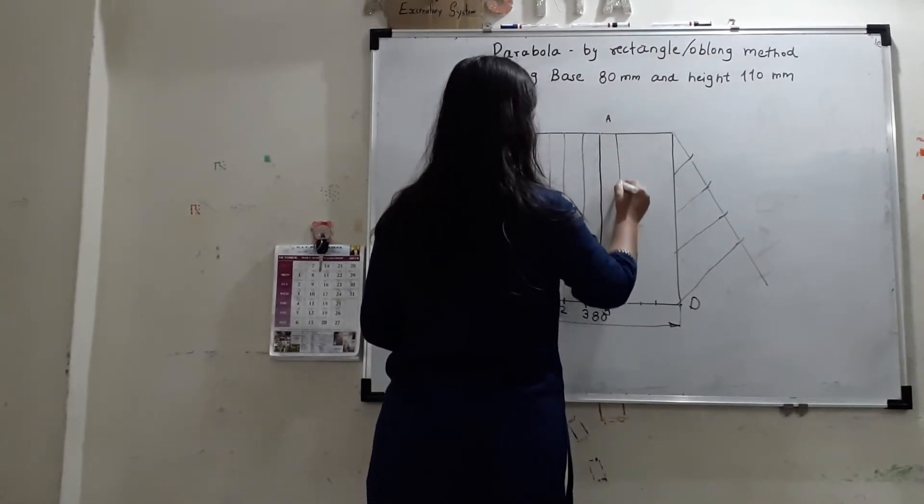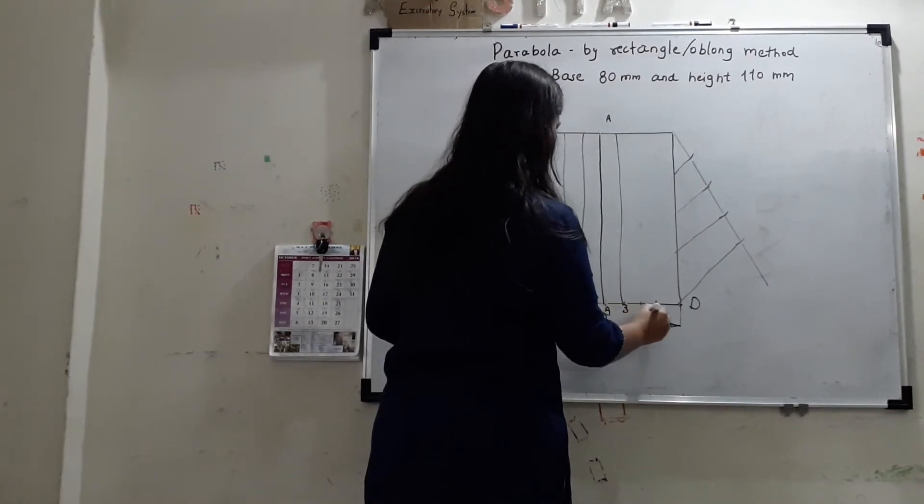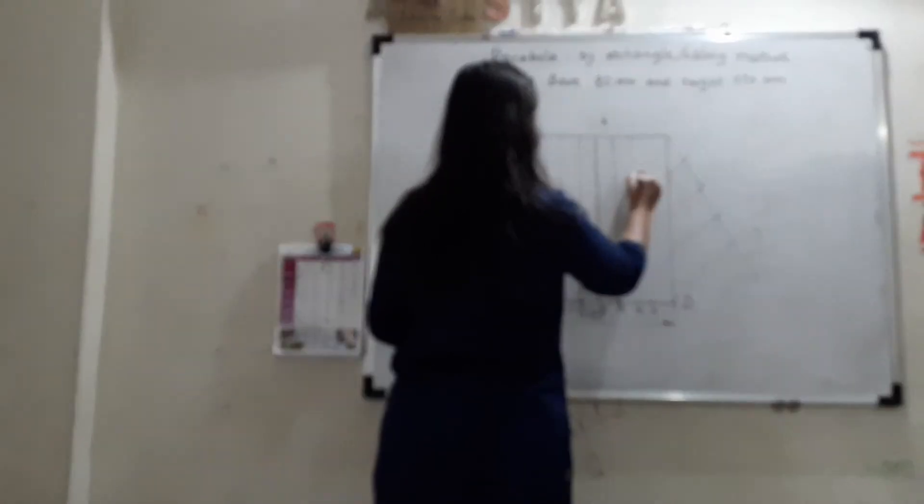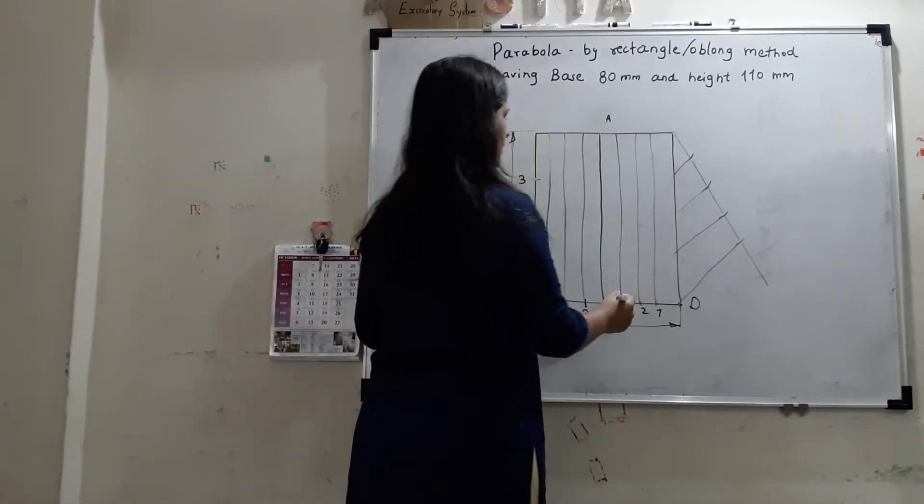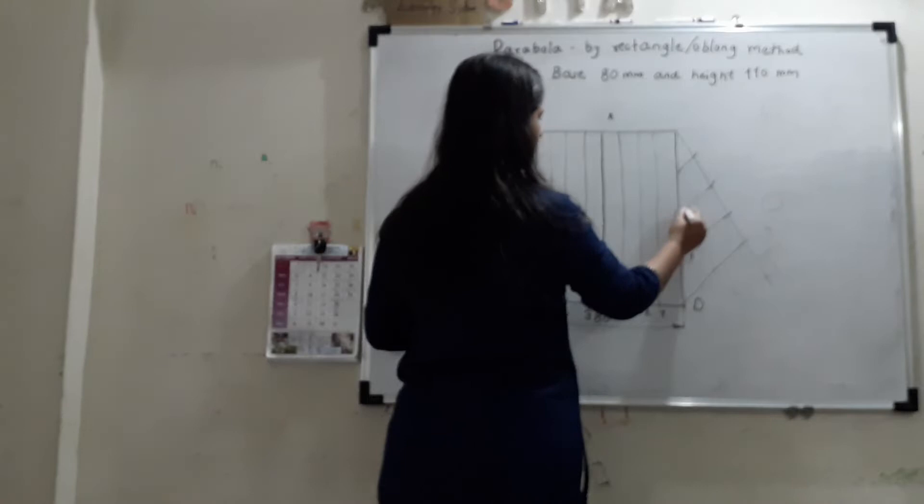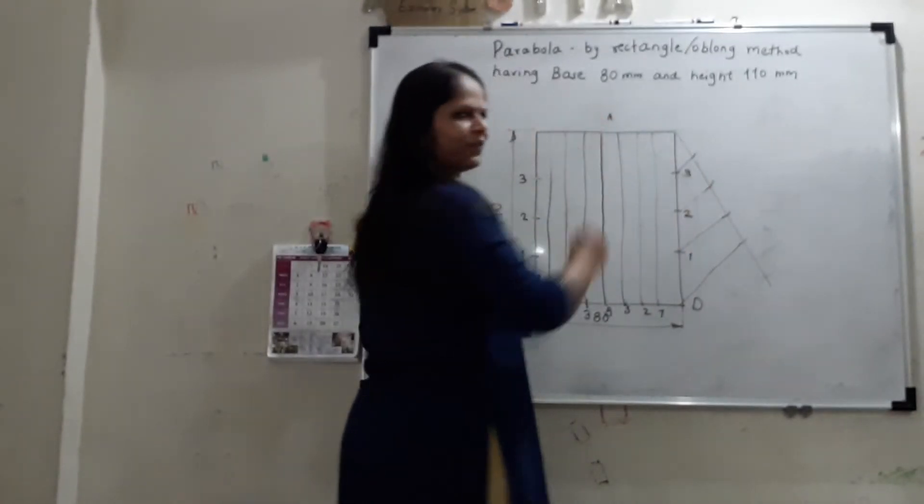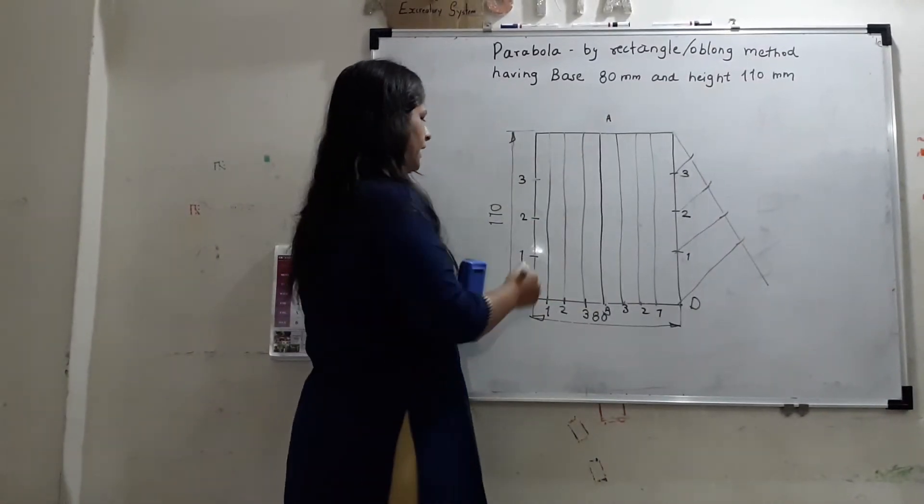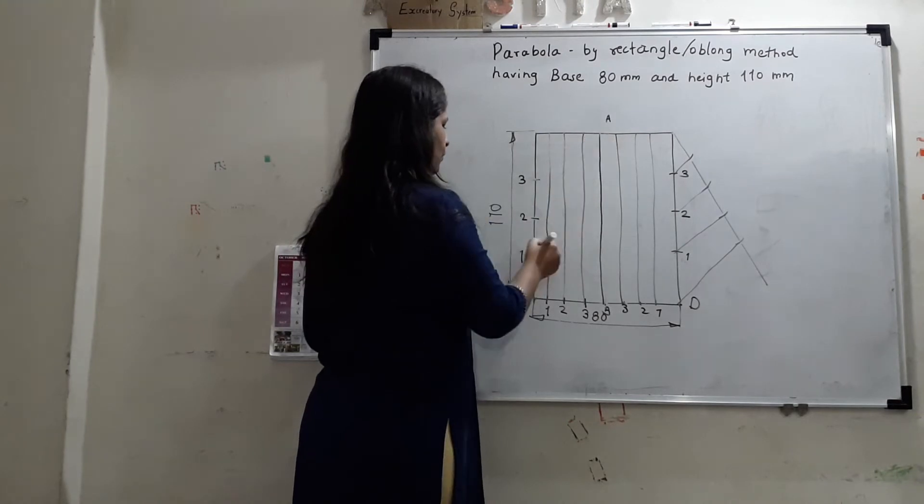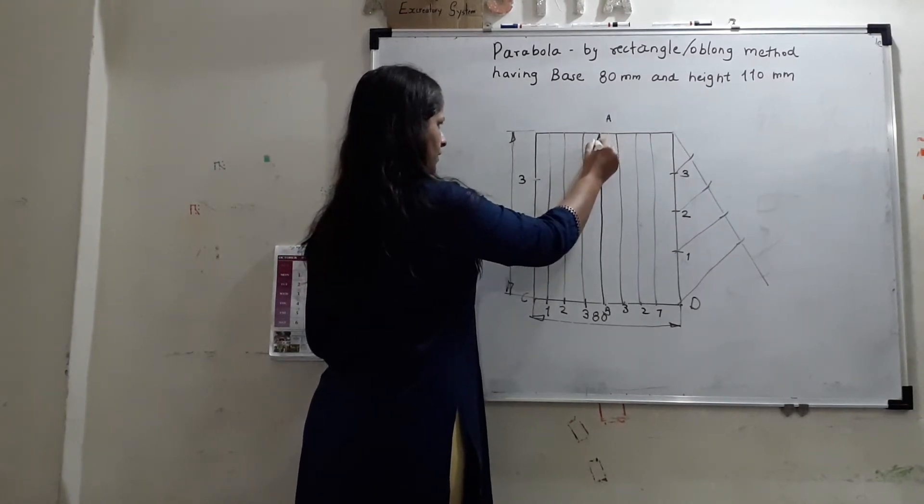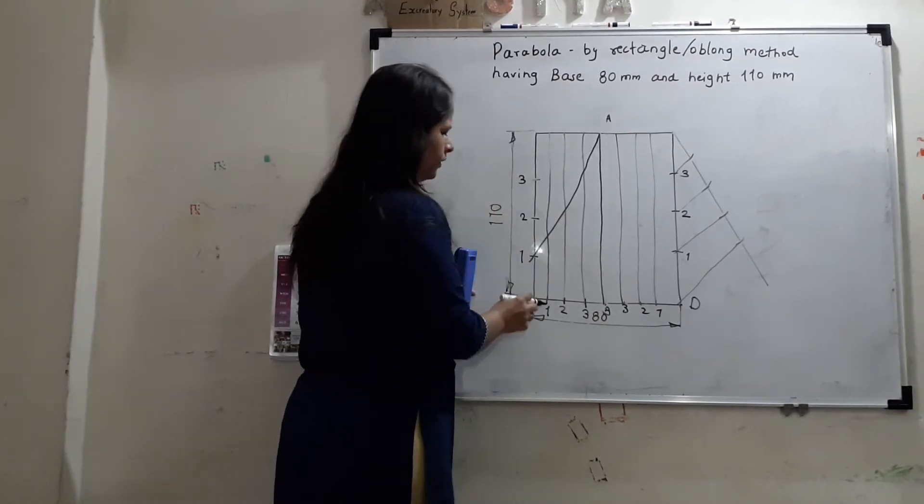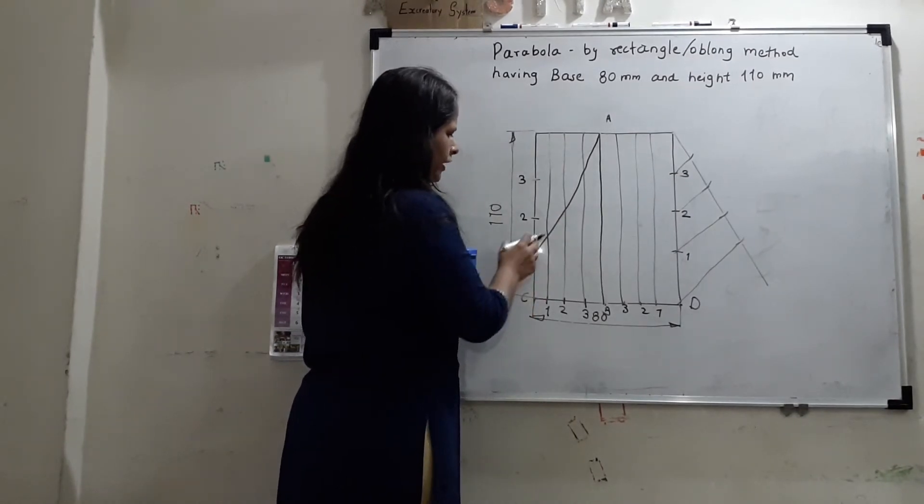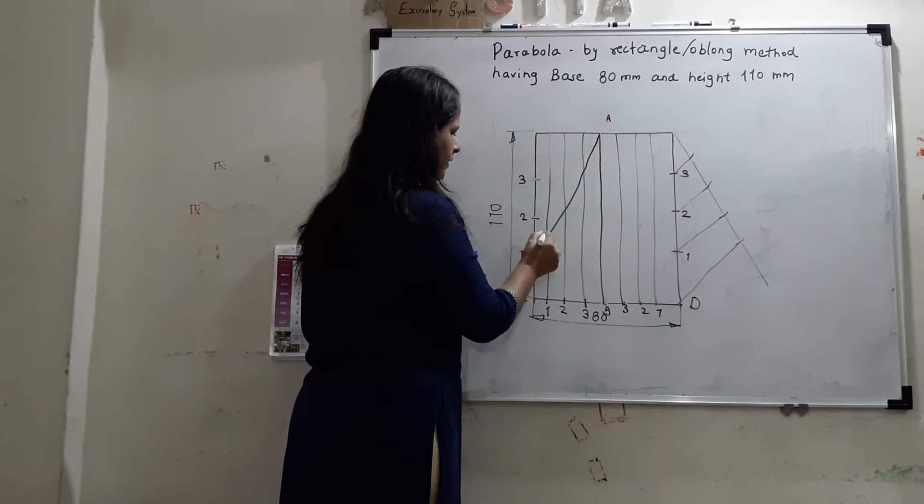First number of lines, this is 3, 2 and 1. Draw the parallel line. Now, this is division 1. This is 2. This is 3. Now, what we have to do? Like, first you draw line A to 1. So, A to 1. Construction should be very, very faint. Now, this is line of 1 and this is of line of 1. So, I am getting point E1 here.